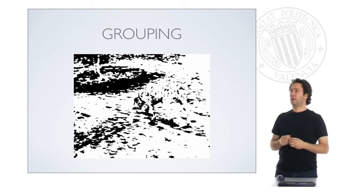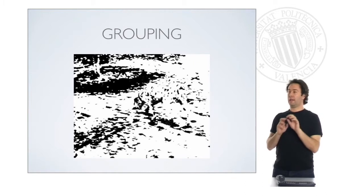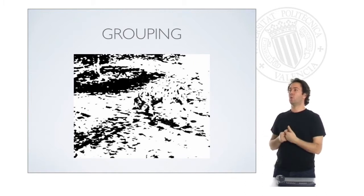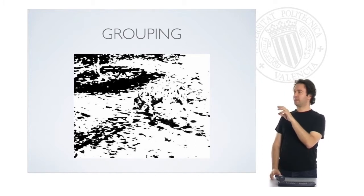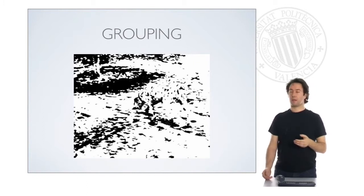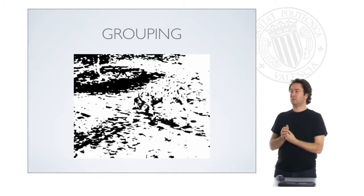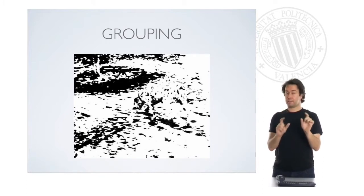This is a good example of how grouping works. Most people here can see different small black shapes — elements which are isolated from each other with apparently no relationship. But usually when you look at the picture for a little time, you realize there is a Dalmatian dog somewhere in a garden. This dog is not real, it's not drawn — it's just an effect from how the different little black elements are placed.